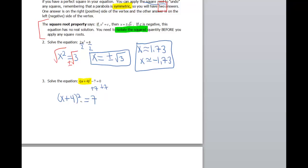So I end up with (x + 4) squared is going to equal 7. I want to undo that square with a square root. So square root, square root, plus or minus.